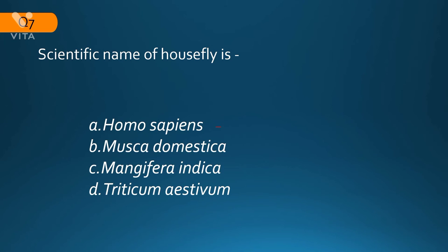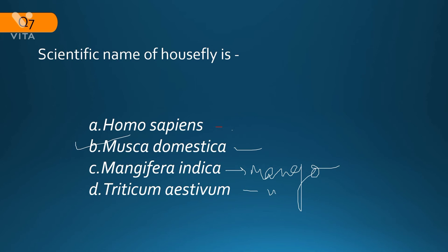The next question: what is the scientific name of the housefly? The options include Homo sapiens, which is the scientific name for human beings; Musca domestica, which is the correct answer for housefly; Mangifera indica for mango; and Triticum aestivum, which is the scientific name of wheat.